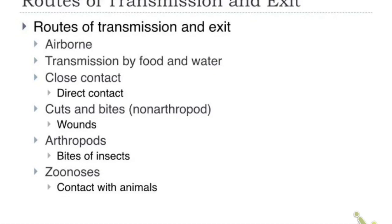Close contact transmission occurs through direct contact such as sexual intercourse or kissing. Cuts and bites — including open wounds — allow microorganisms to enter. Zoonosis means contact with animals. Arthropods such as insects can also be a source of infection — for example, to get dengue or malaria, you need an arthropod vector. These are examples of arthropod-borne infections.